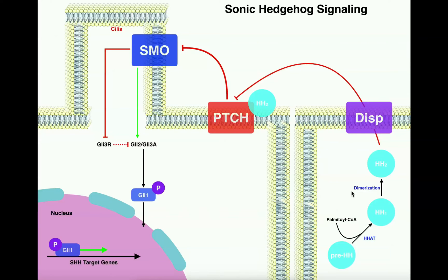In the cell that's going to secrete hedgehog, it's going to manufacture and secrete it. First, we have the immature form called pre-hedgehog. Pre-hedgehog has to first be acylated — it has to have a palmitoyl group, a 16-carbon fatty acid tail, attached to it. That's catalyzed by hedgehog acyltransferase, which uses a palmitoyl-CoA to transfer a palmitoyl group onto pre-hedgehog, making a monomer of hedgehog (HH1). Two hedgehog monomers then have to dimerize into a hedgehog dimer, HH2.